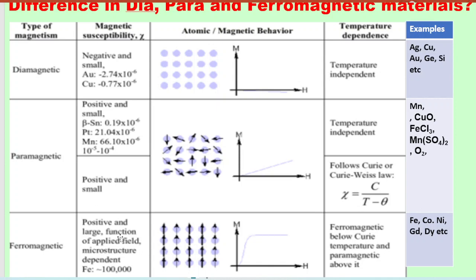For ferromagnetic materials, the susceptibility values are positive and large, ranging from 10³ to 10⁵. Regarding dipole moments: diamagnetic materials do not have any permanent dipole moment, and their susceptibility is temperature independent. Paramagnetic materials have permanent dipole moments but they are oriented in random directions, resulting in very weak magnetization whose susceptibility depends on temperature.